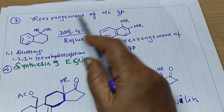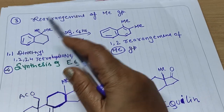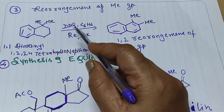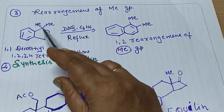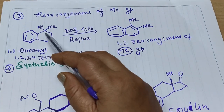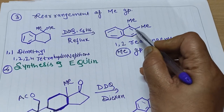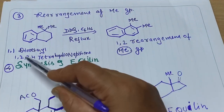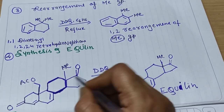The next application is the rearrangement of methyl groups. DDQ can assist in the rearrangement of methyl groups. Initially, both methyl groups are at the 1,1-position. After using DDQ as a reagent in benzene solvent under reflux, the two methyl groups change position — one stays at position 1 and the other moves to position 2 — and a double bond forms.